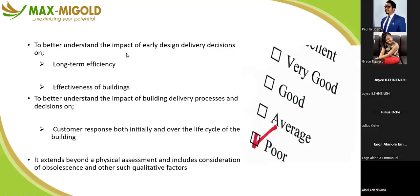When you do performance evaluation, you better understand the impact of early design delivery decisions on long-term efficiency and effectiveness of the building. It also helps you understand the delivery process — are you providing water and power as agreed? For example, if 24-hour power supply was part of the agreement, are you actually providing it? With evaluation you identify areas needing improvement, what you're doing well to sustain, and what is costing disproportionate amounts that should be dropped.